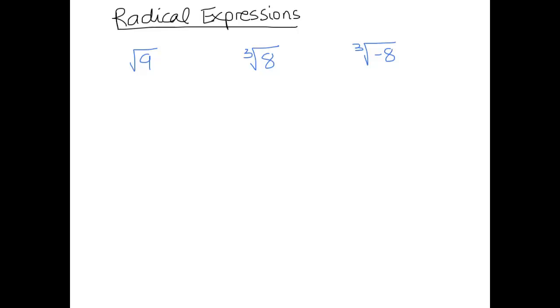So we're going to be talking about radical expressions in this video. To begin, I thought we'd start off with something that is pretty familiar, the square root of 9. Now you may not know this, but even though there's no number in this area, there actually is a 2. So whenever you don't see something there, that is a 2. That's called the index.